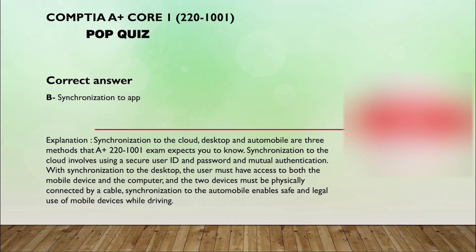The correct answer is synchronization to the cloud, desktop, and other mobile devices — the three methods the CompTIA A+ 220-1001 exam expects you to know. Synchronization to the cloud involves using a secure user ID, password, and mutual authentication. Synchronization to the desktop requires access to both the mobile device and computer, and the two devices may be physically connected by cable. Synchronization to the automobile enables safe and legal use of mobile devices while driving.